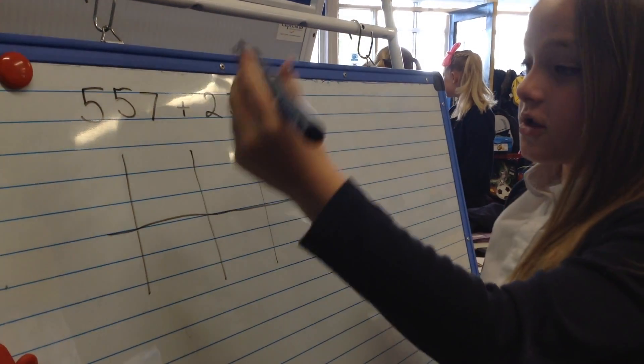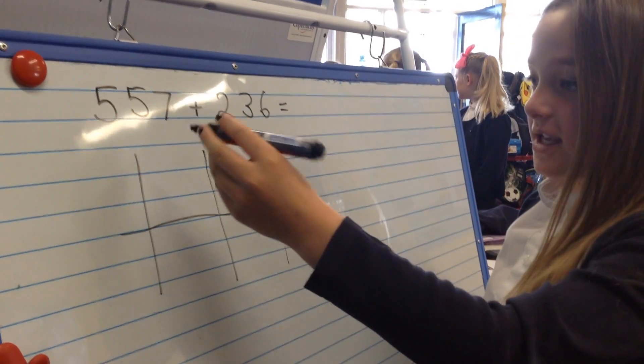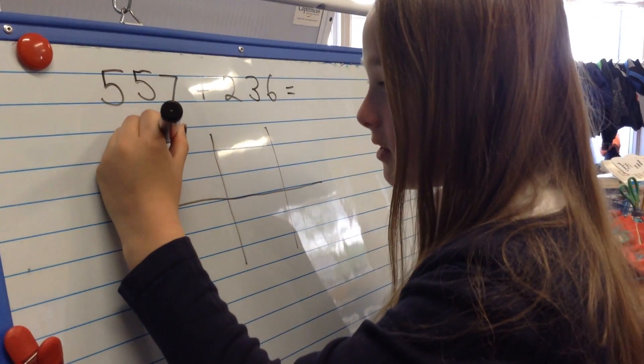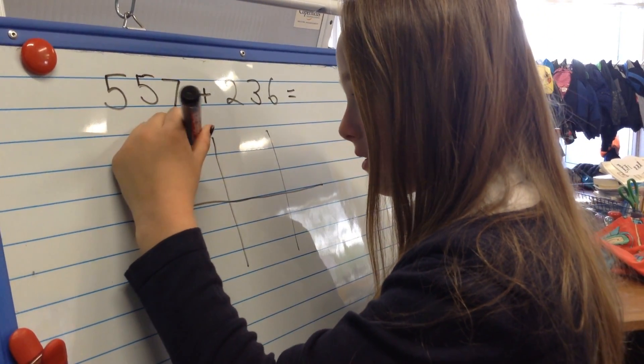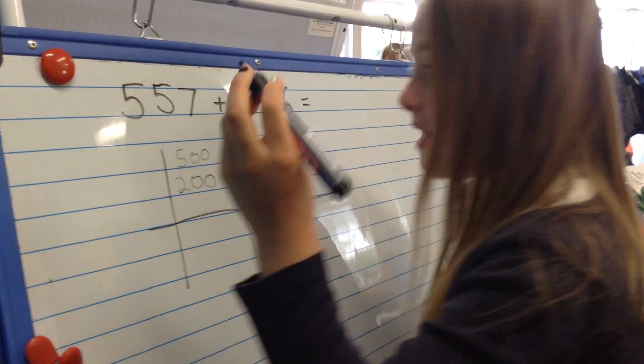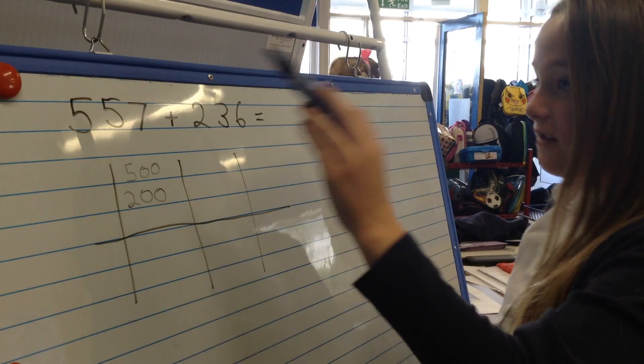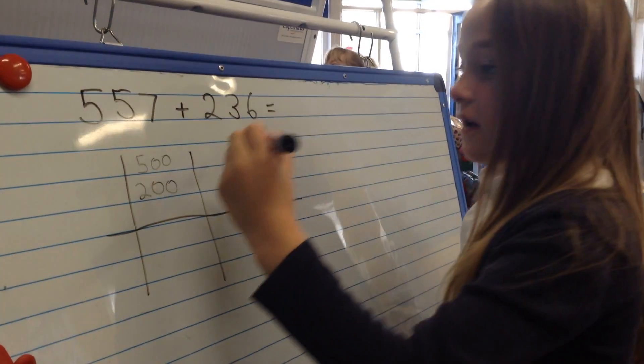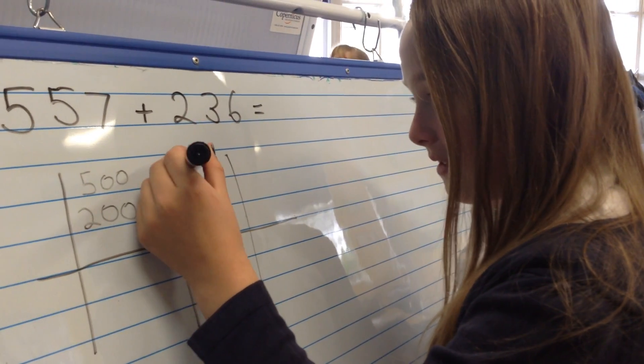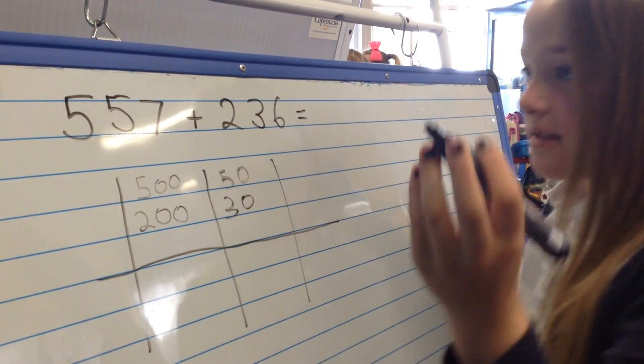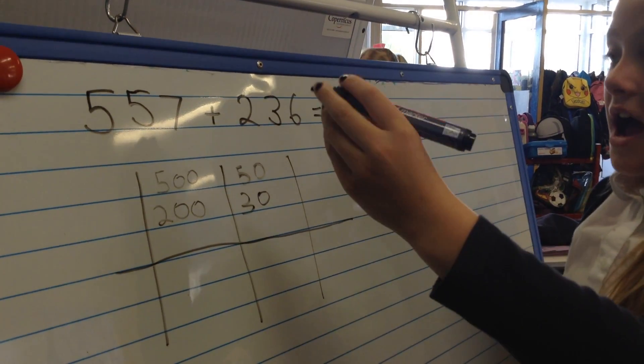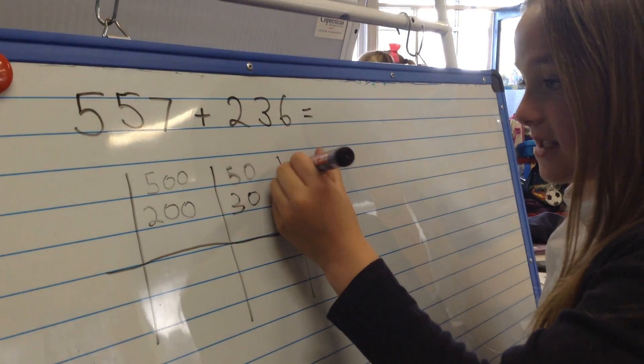So you'd have to put 500 in this column which is 500 and 200. And then you'd have to partition the tens which would be 50 and 30. And then you'd have to partition the ones which would be 7 and 6.